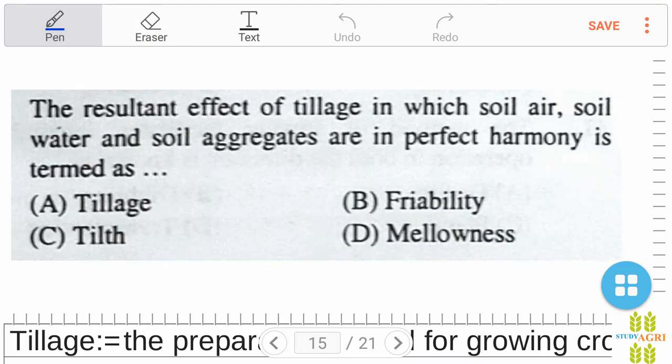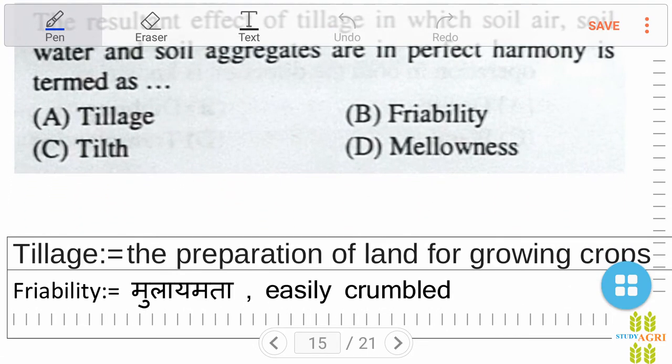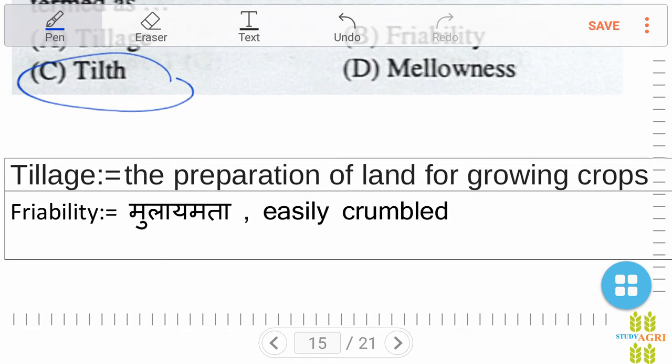The resultant effect of tillage in which soil air, soil water, and soil aggregates are in perfect harmony is termed as option C, tilth. Right answer is C. Tillage means the preparation of land for growing crops, and friability means easily crumbled, or in Hindi it is known as mulayamata.